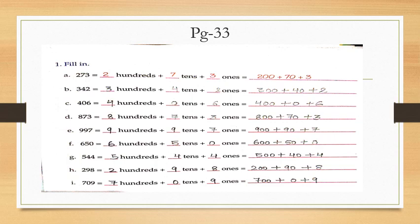Next, Part E: the number is 997. You will write: 9 hundreds + 9 tens + 7 ones. In expanded form: 900 + 90 + 7. This is the expanded form of 997.